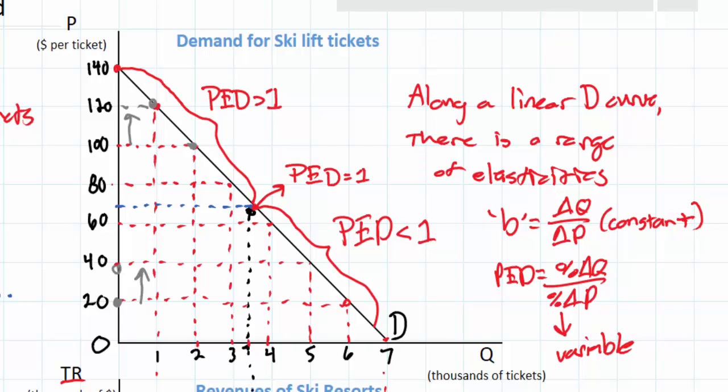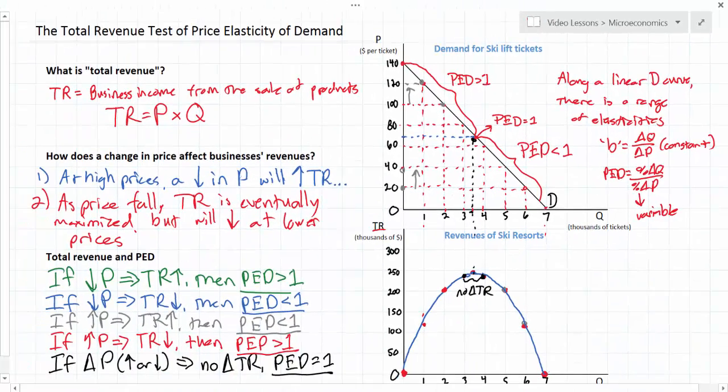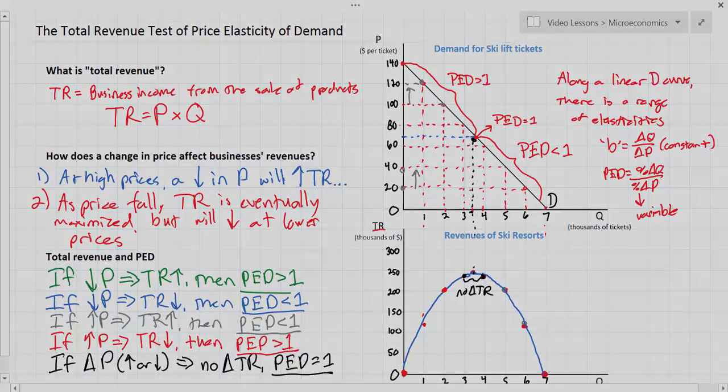This result will be higher at high prices and lower at low prices, implying that the price elasticity of demand changes even along a straight line demand curve. At high prices demand is relatively elastic whereas at low prices demand is relatively inelastic.